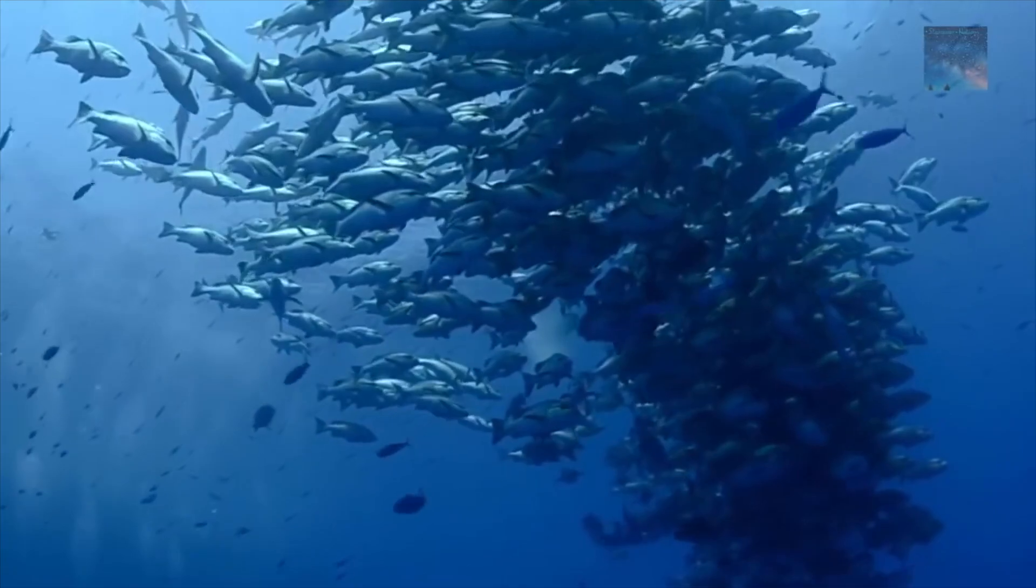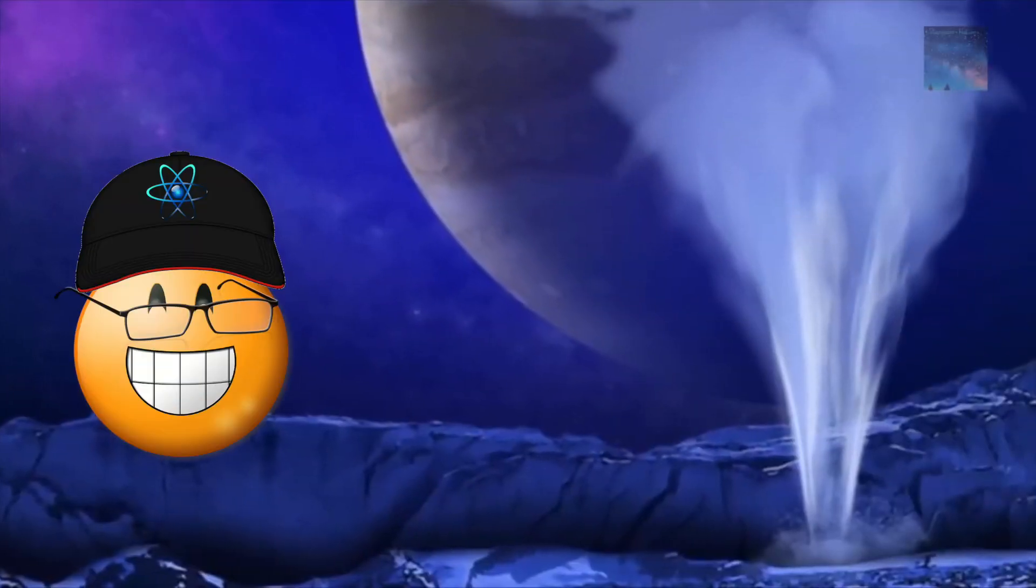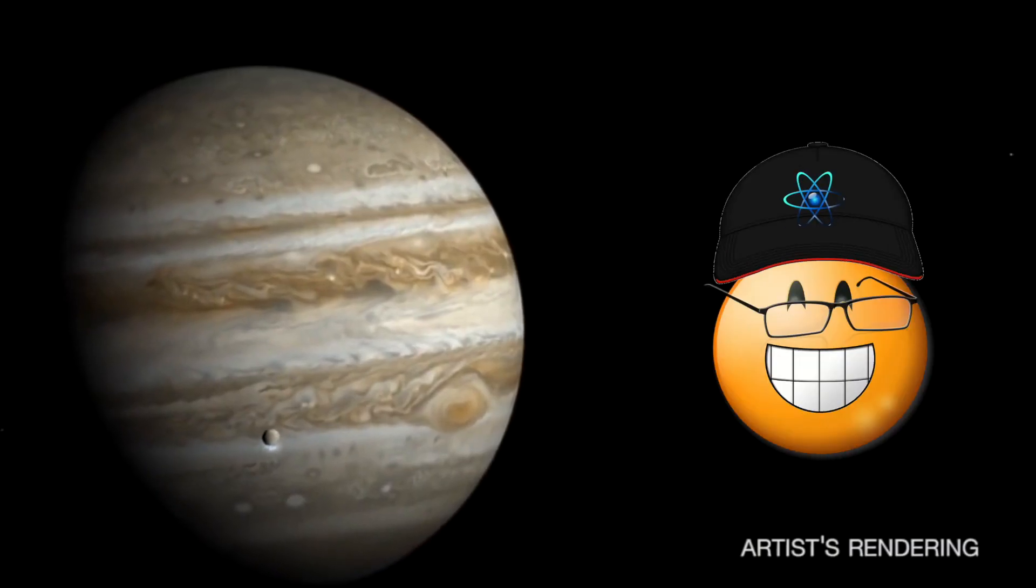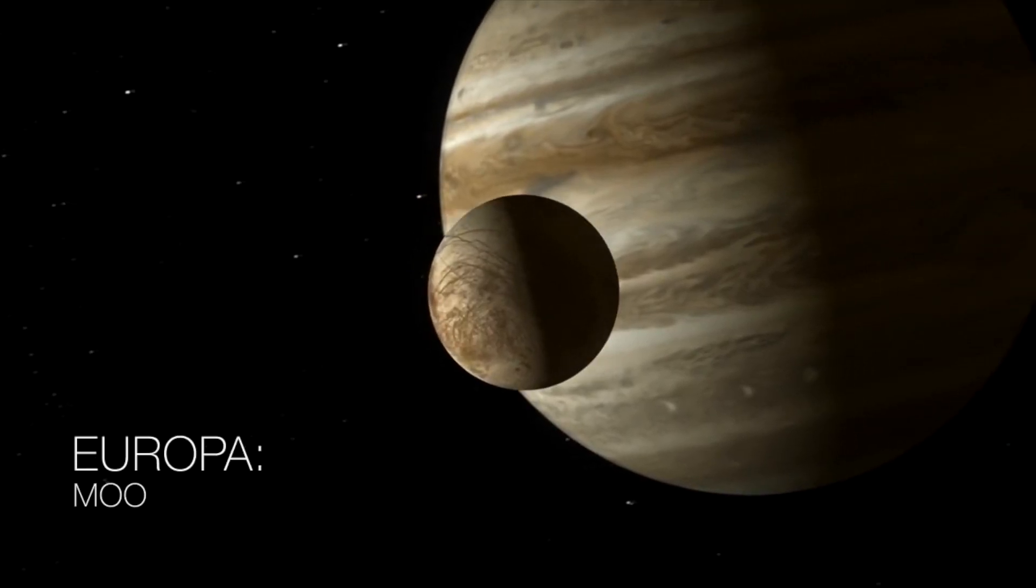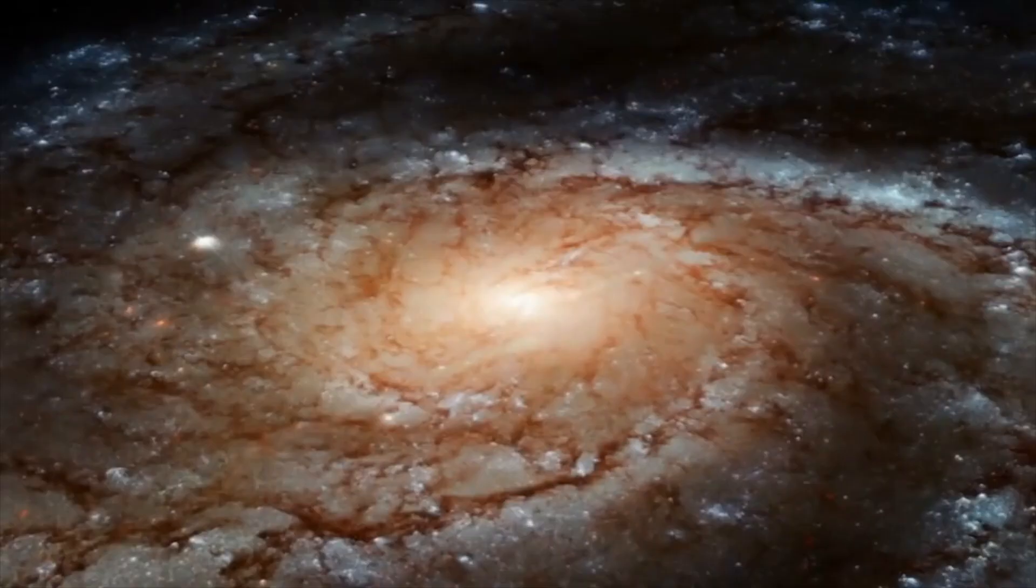Water is the fountainhead of life. That's why scientists are mighty excited about having detected a water fountain spraying out from Jupiter's fourth-largest moon, Europa, which is already considered one of the prime candidates for life in our solar system.